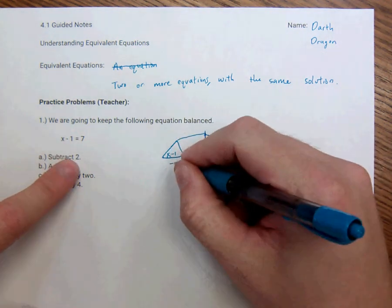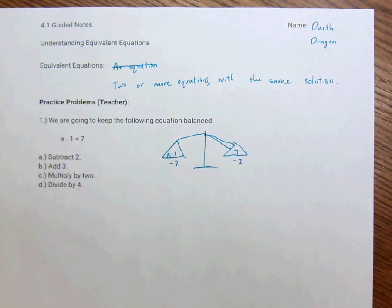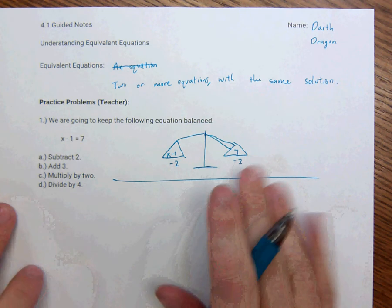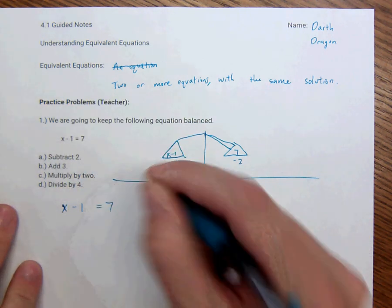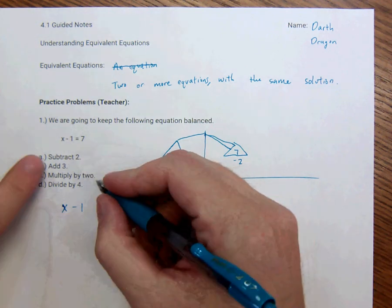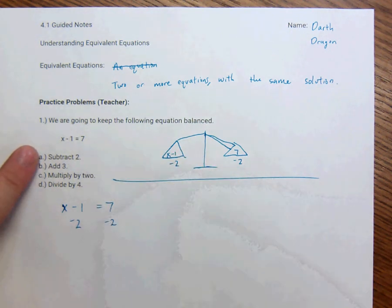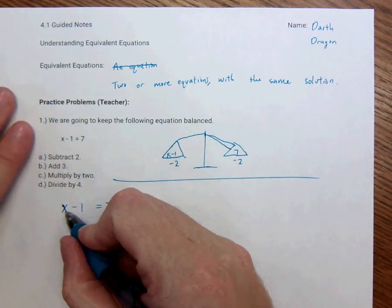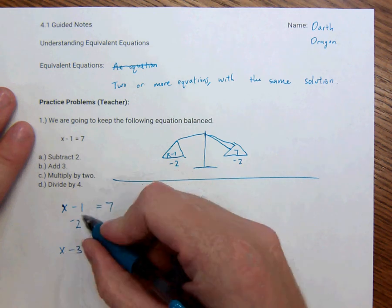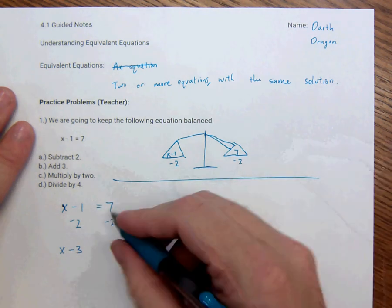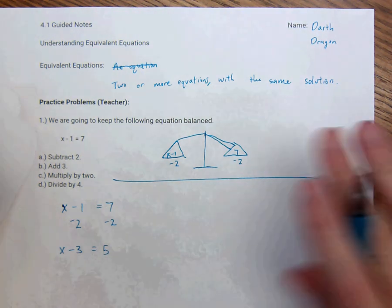So if I subtract 2, say I subtract 2 over here, I have to subtract 2 over here to keep things balanced. So anyways, let's play with that thought. So I start out with x minus 1 equal to 7, and then I want to subtract 2. So I'm going to take away 2 here, and what I do to one side, I have to do to the other. So I'm going to take away 2 here. On this side, it becomes x minus 3, because negative 1 minus 2. And on this side, it becomes 5. I have kept it equal.